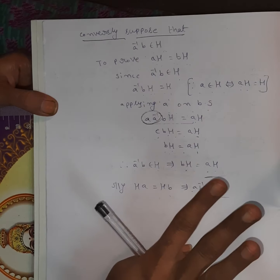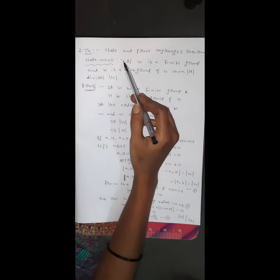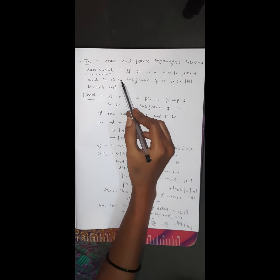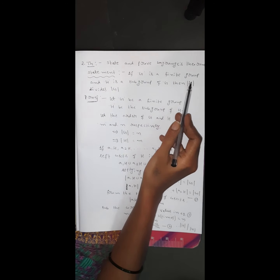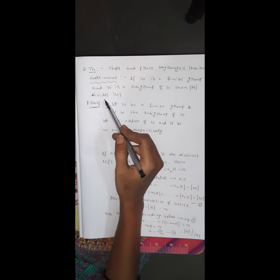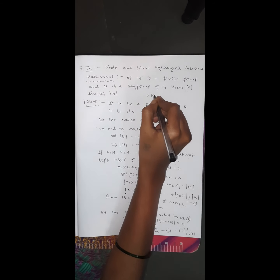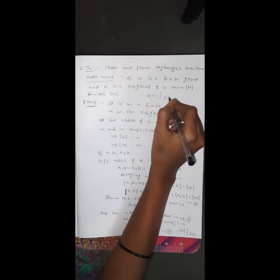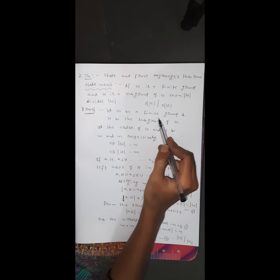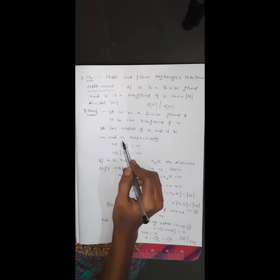Now the second theorem: State and prove Lagrange's theorem. This is very important for 10 marks. Statement: If G is a finite group and H is a subgroup of G, then the order of H divides the order of G. Proof: Let G be a finite group and H be the subgroup of G. Let the order of G be N and the order of H be M respectively.